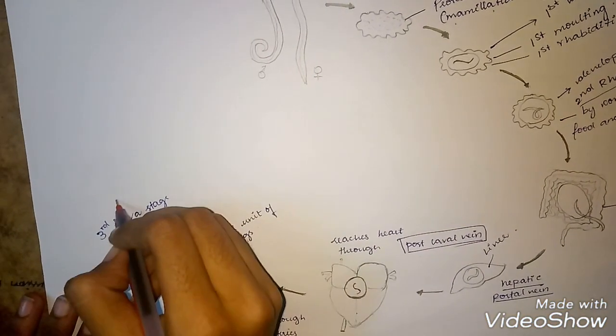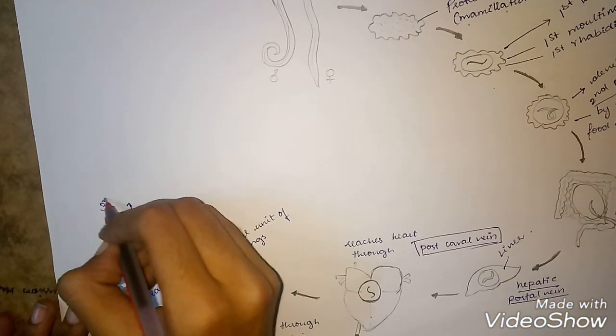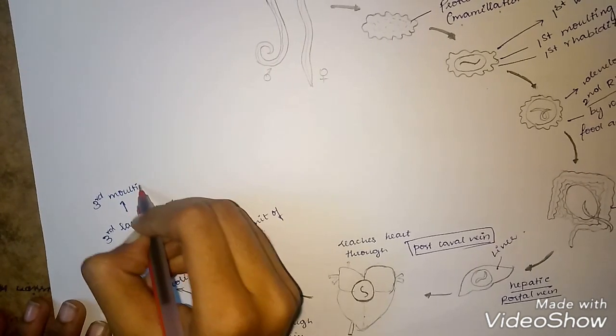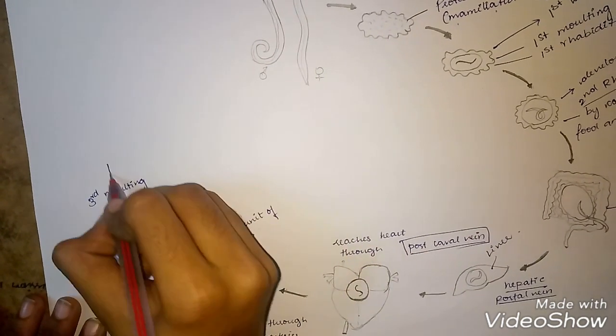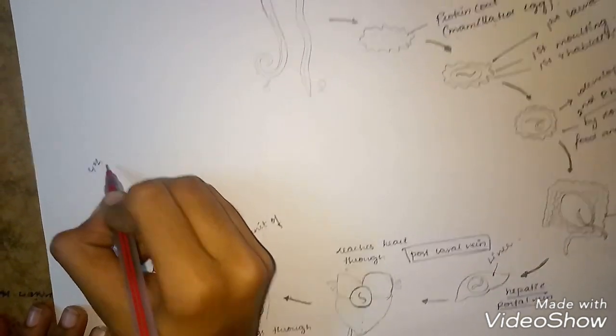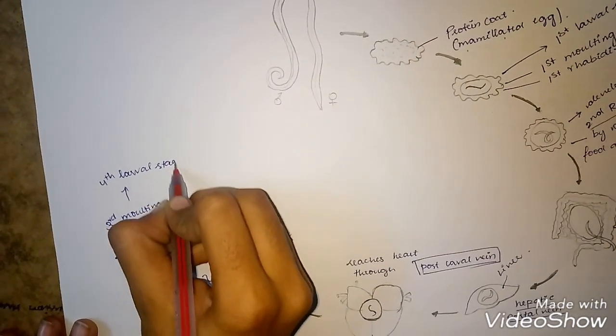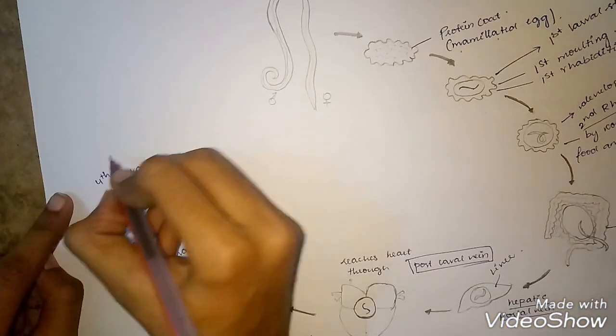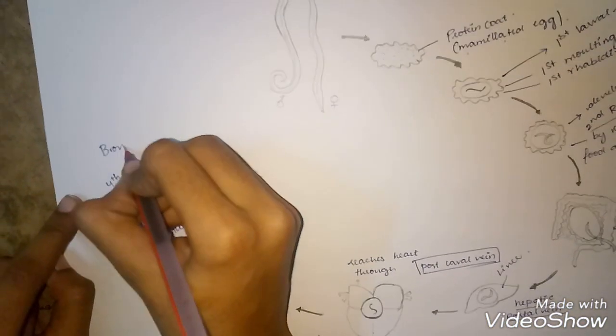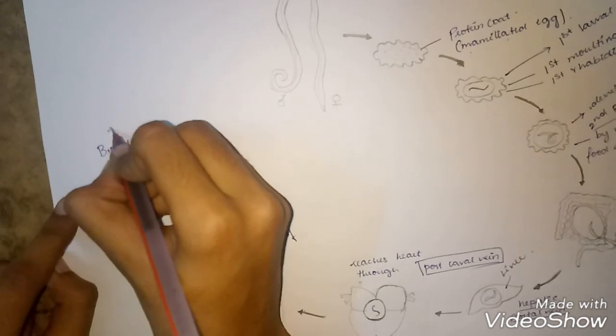After the third larval stage, it undergoes third molting and forms the fourth larval stage. The larvae then move into the bronchi and trachea.